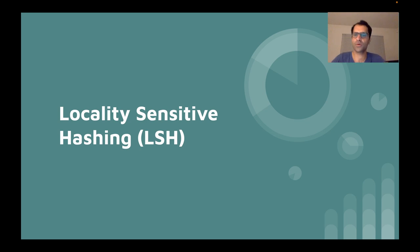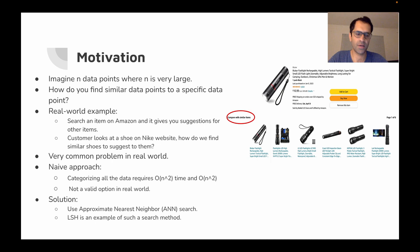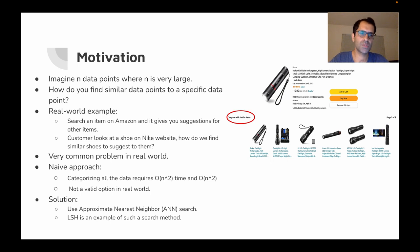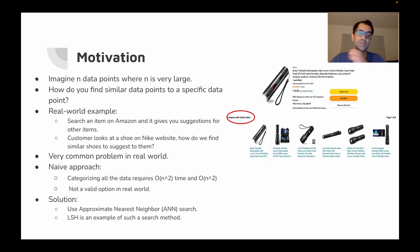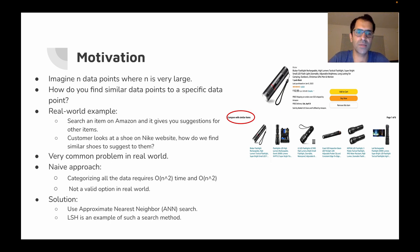In this talk, I want to discuss locality sensitive hashing. The motivation for this problem is the case when we have a large number of data points and we want to search within that large database and find similar items. As an example, imagine you want to shop on Amazon.com and you find an item — Amazon is suggesting a few similar items to you, and we want to see how this is actually being done.